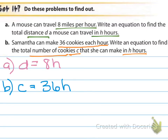Here are the answers. A mouse can travel 8 miles per hour — write an equation to find the total distance D a mouse can travel in H hours. That's D equals 8 times H. For B, Samantha can make 36 cookies each hour — write an equation to find the total number of cookies C she can make in H hours. Notice they're giving you the variables, so you use them: C equals 36 times H.